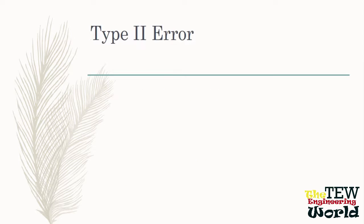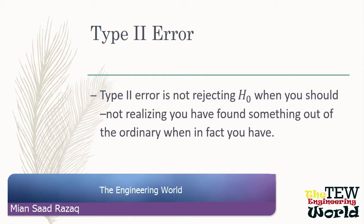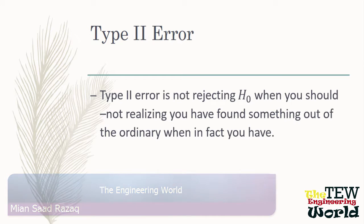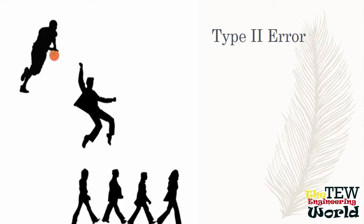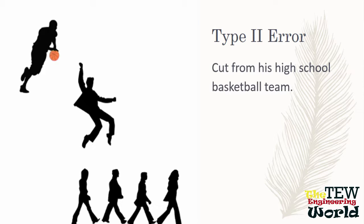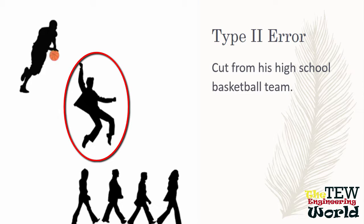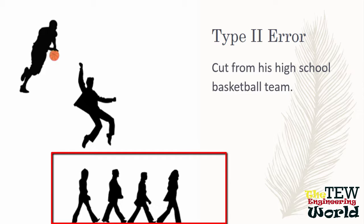By contrast, Type 2 error is not rejecting a null hypothesis when you should — not realizing you have found something out of the ordinary when in fact you have. Why do researchers hate to make this one? Here are some examples of Type 2 error. The athlete in the top picture was cut from his high school basketball team. The gentleman in the middle was rejected when he auditioned for a nationally televised TV show as a young man. And the four gentlemen at the bottom auditioned for a recording contract early in their careers and did not get it.